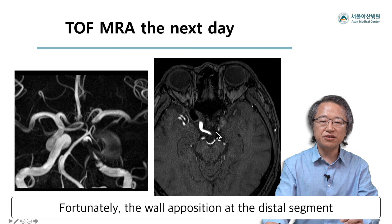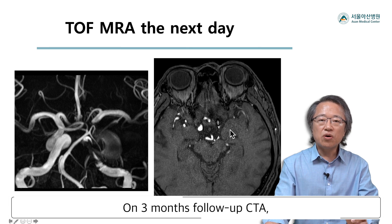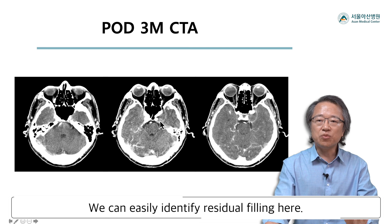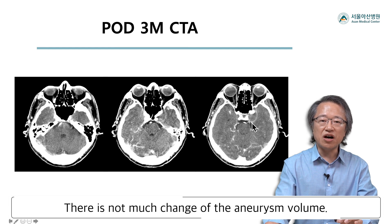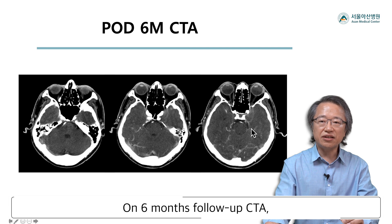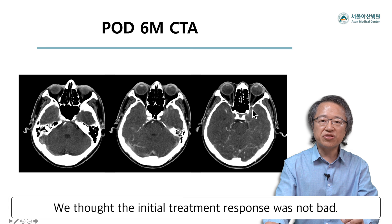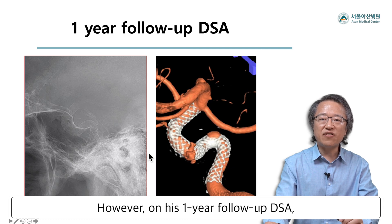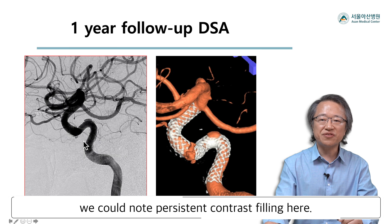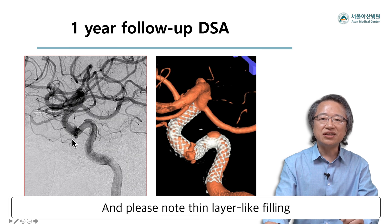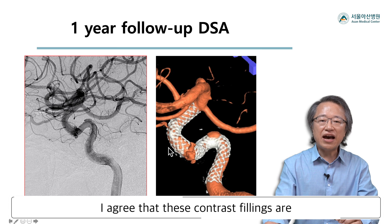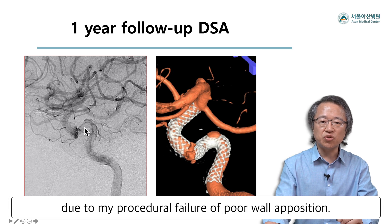The wall apposition at the distal segment seemed relatively good. On 3-month follow-up CTA, we can easily identify residual filling here, with not much change of the aneurysm volume. On 6-month follow-up CTA, the residual filling was not seen anymore, and we thought the initial treatment response was not bad. However, on 1-year follow-up CTA, we could note persistent contrast filling here. Please note the thin layer-like filling of the contrast media. I agree that these contrast fillings are due to my procedural failure of poor wall apposition.